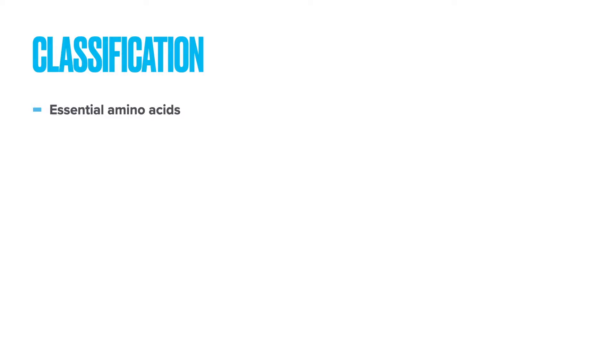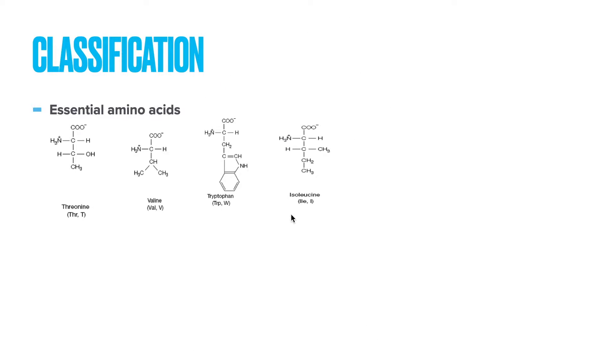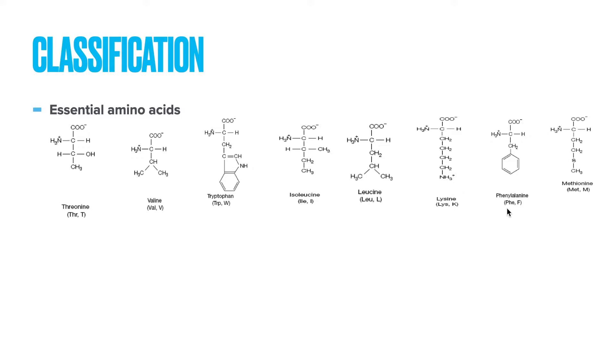Now let us jump into the classification of amino acids. My first classification is essential amino acids, non-essential amino acids, and semi-essential amino acids. Essential amino acids are the ones that are absolutely essential in our diet because we cannot synthesize them in our body. We really need them in our diet to produce or synthesize new proteins. The 8 absolutely essential amino acids are: threonine, valine, tryptophan, isoleucine, leucine, lysine, phenylalanine, and methionine.